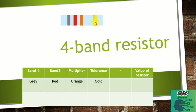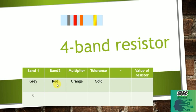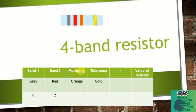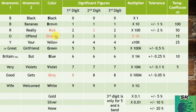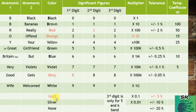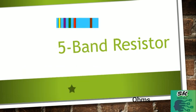For the four-band resistor with colors gray, red, orange, and gold: gray as the first digit is 8, red as the second digit is 2, orange as the multiplier is 1k, and gold for tolerance is ±5%. So our value comes out to be 82 kΩ ±5%.